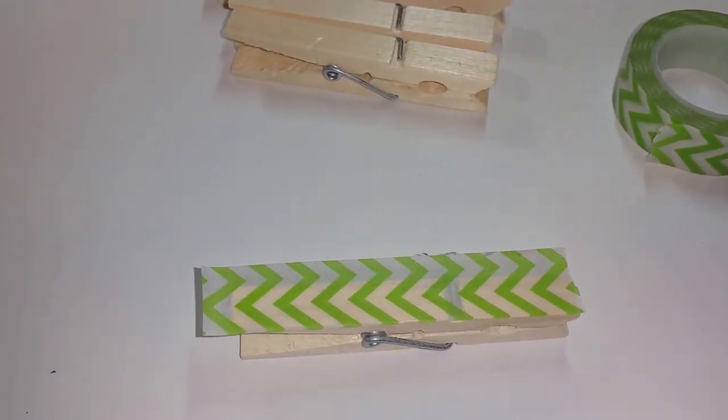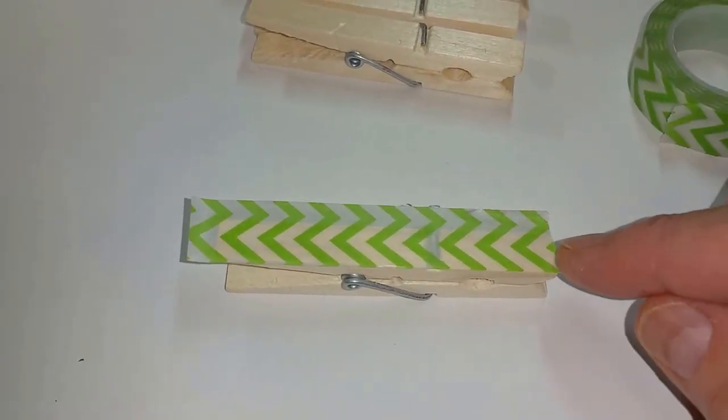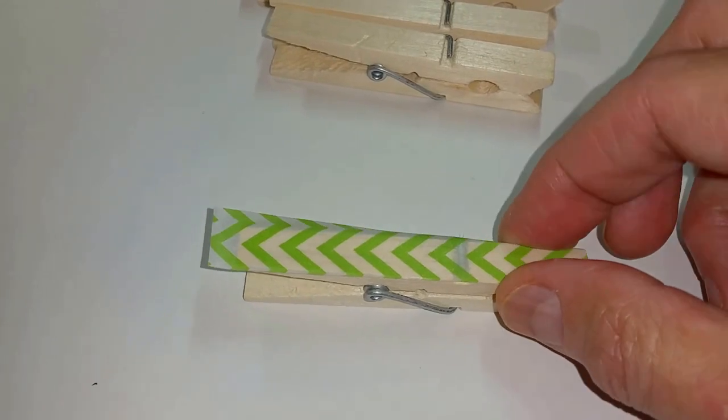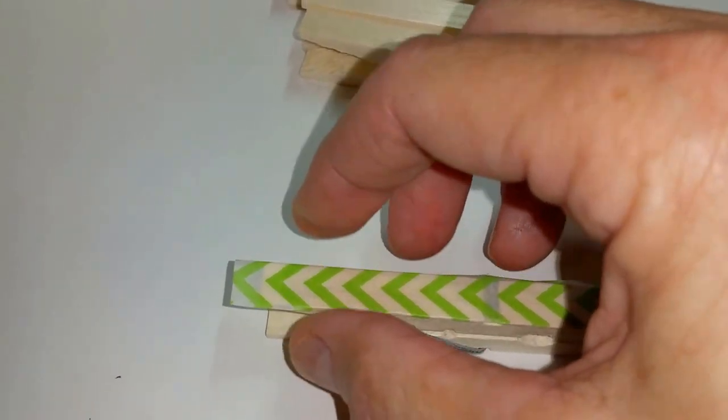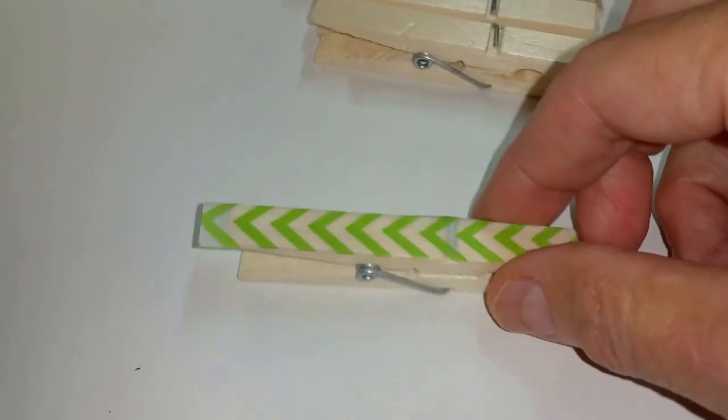So what I've done is I've stuck some washi tape on my clothespin and I was careful to make it as close to the end of this side as I can. Now I'm going to fold over the side slowly and get it down pretty securely. So one end is flat and looks fine; the other end is going to have a little overlap.